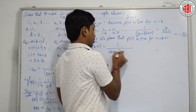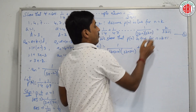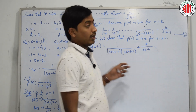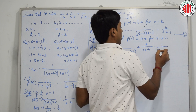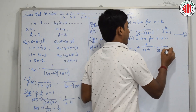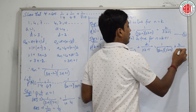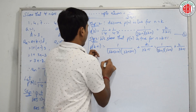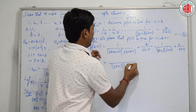Substituting k plus 1, the next term becomes 1/((3(k+1)−2)(3(k+1)+1)) = 1/((3k+1)(3k+4)). Adding this to k/(3k+1) from P(k), we take the LCM which is (3k+1)(3k+4). In the numerator, the left term contributes 1 and we have k into (3k+4).